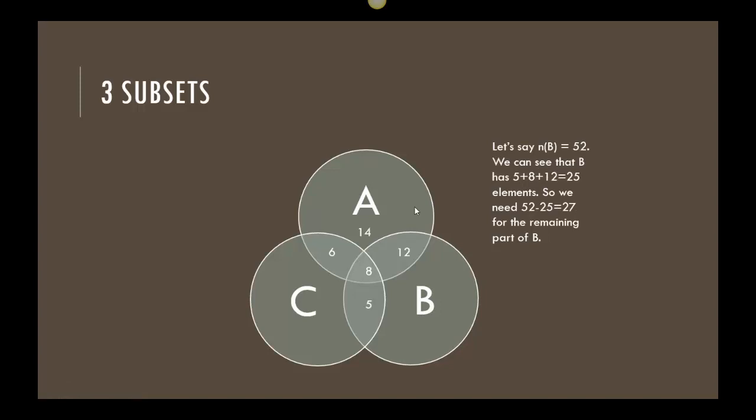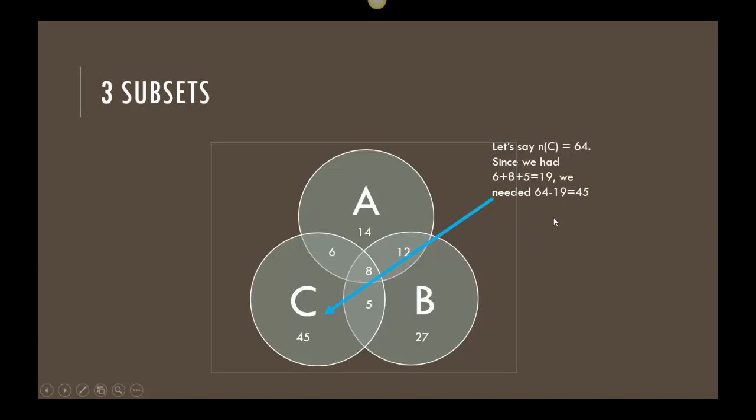So let's say what else? What if I told you B is 52? So I want this circle to add up to 52. I would do the same thing again. I would say, well, 12 and 8 is 20 plus 5 is 25. So I know I have 25 already. I want to do 52 minus 25 is 27 so that I can put 27 into the remainder of B.